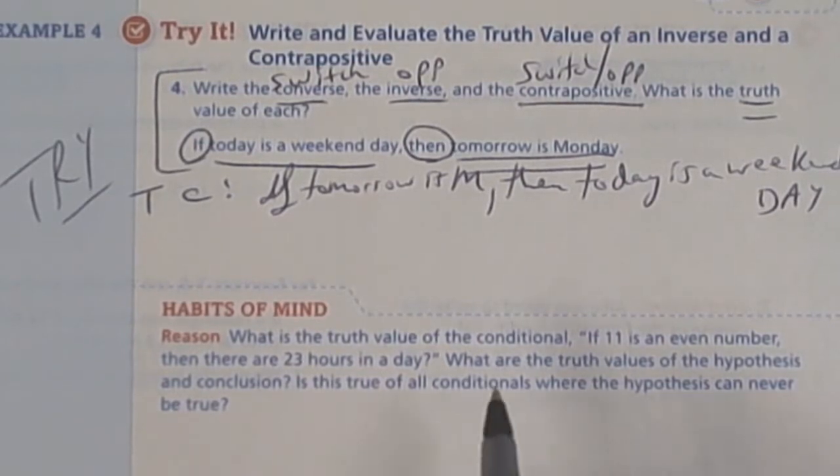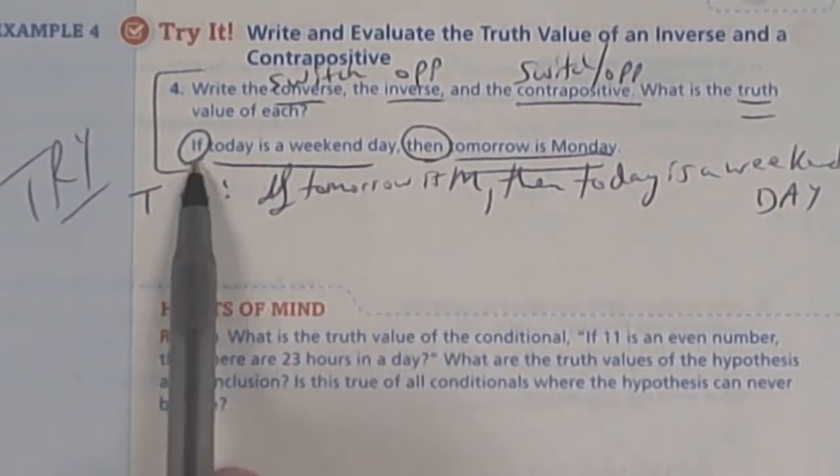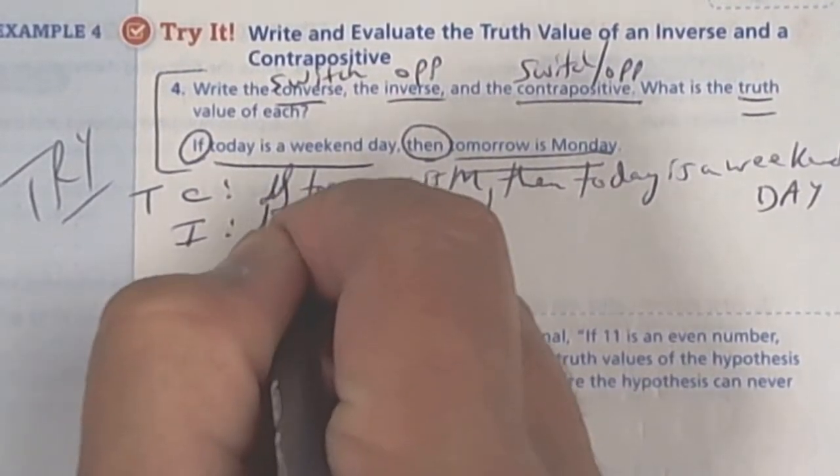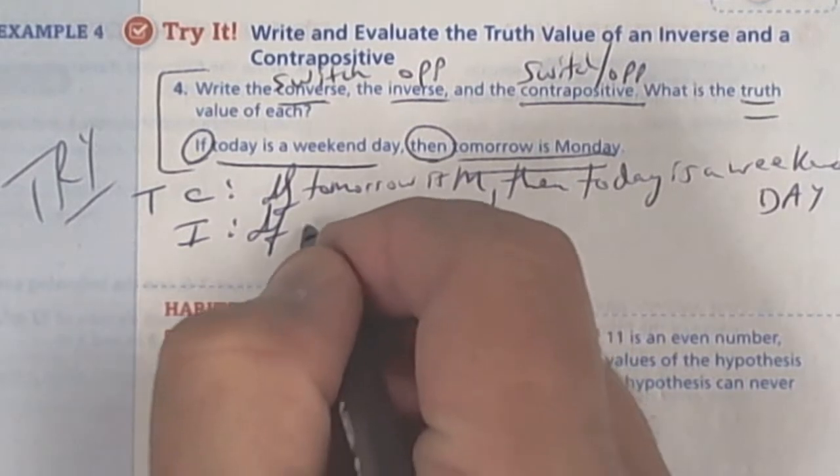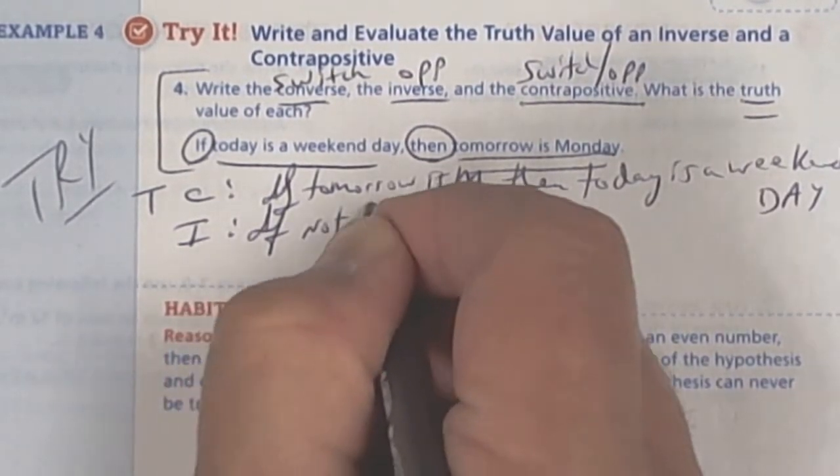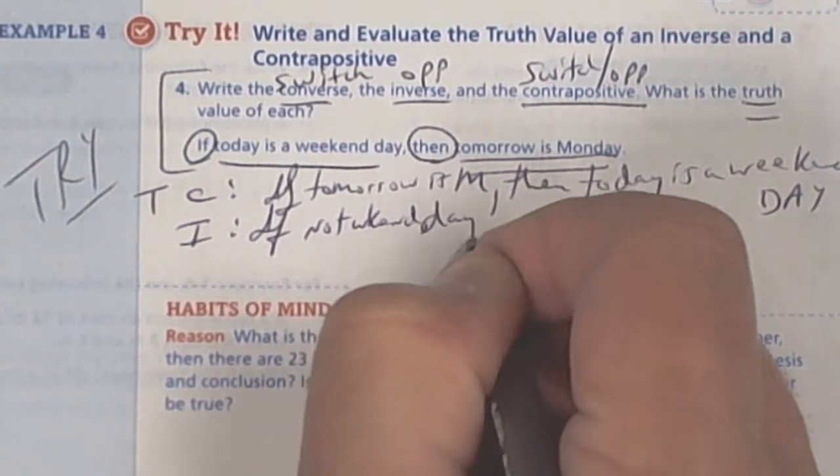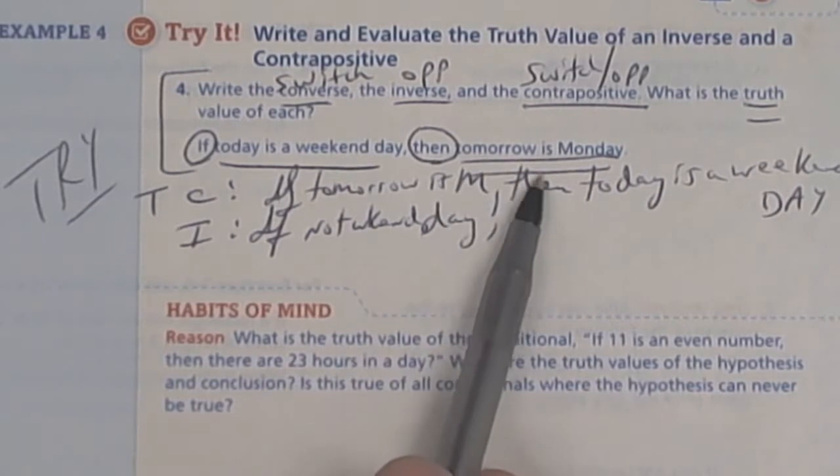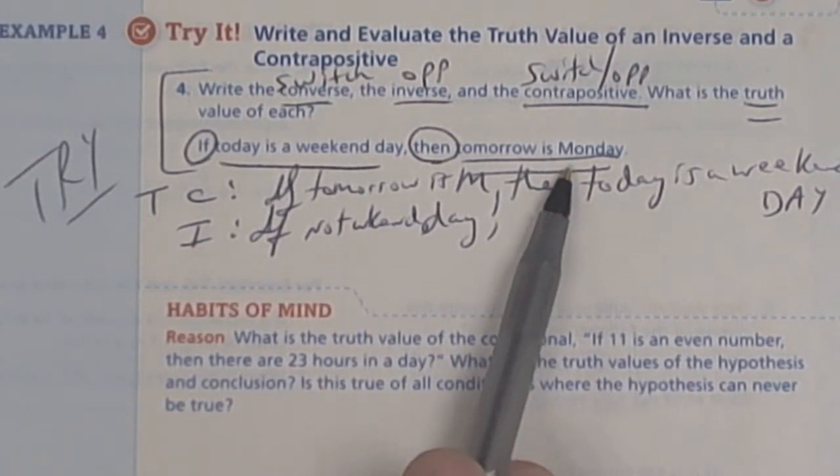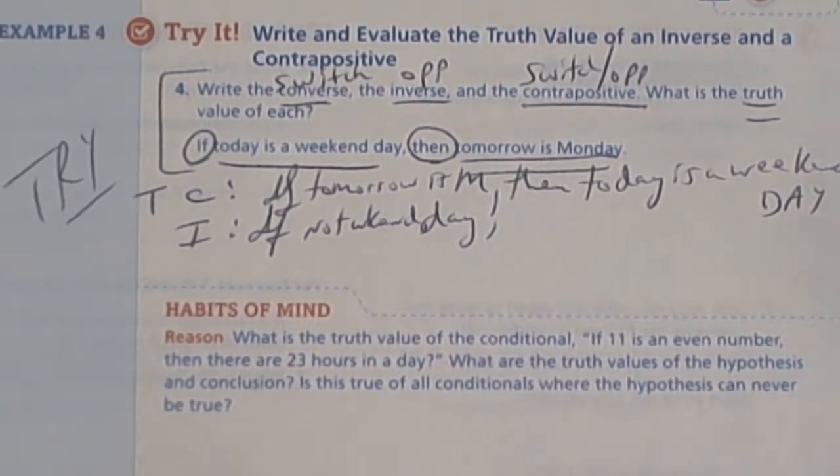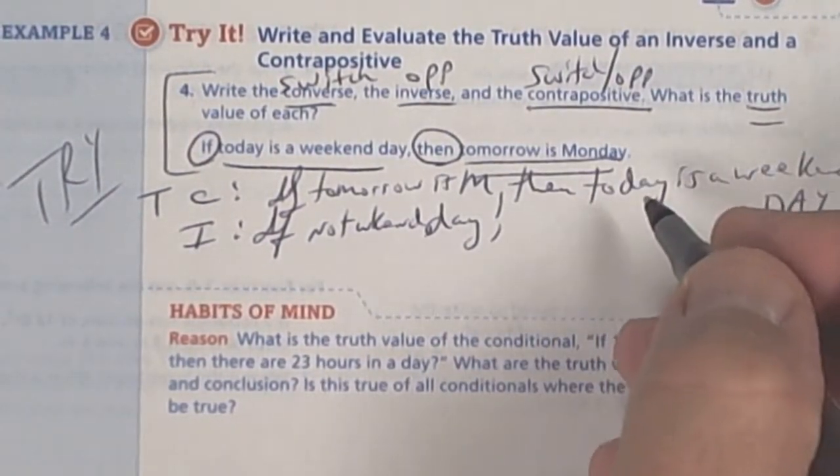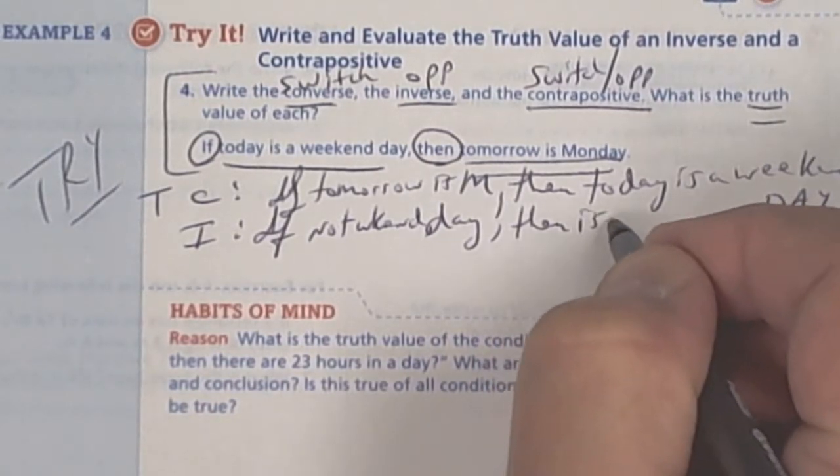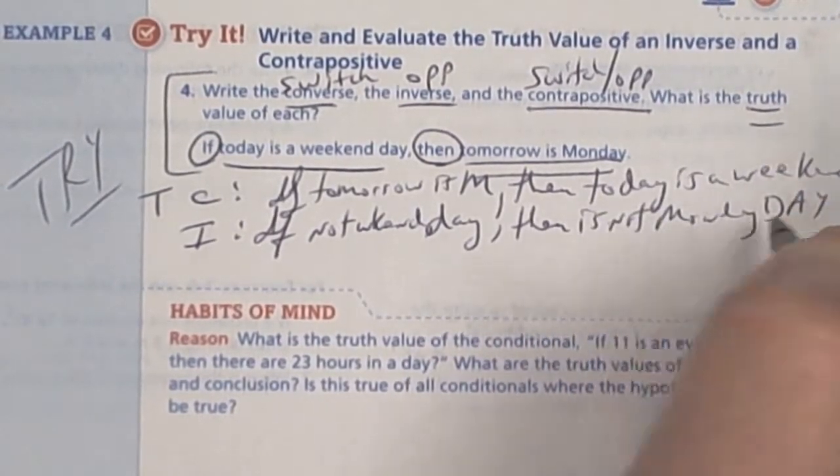And then the inverse would be the opposite. So don't switch it. Just say, if today is not a weekend day. So the inverse would be, if today is not a weekend day. And I'm abbreviating here. I don't want you to abbreviate, but I am. So if today is not a weekend day, then tomorrow is not Monday. That's going to be true. If it's not a weekend day, then tomorrow is not Monday. That's going to be true.